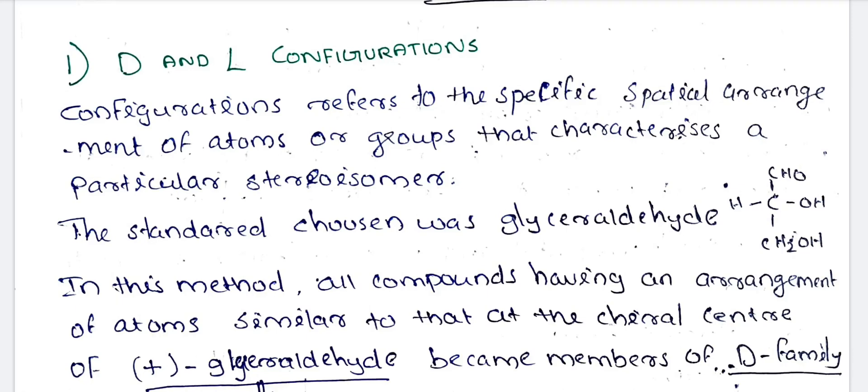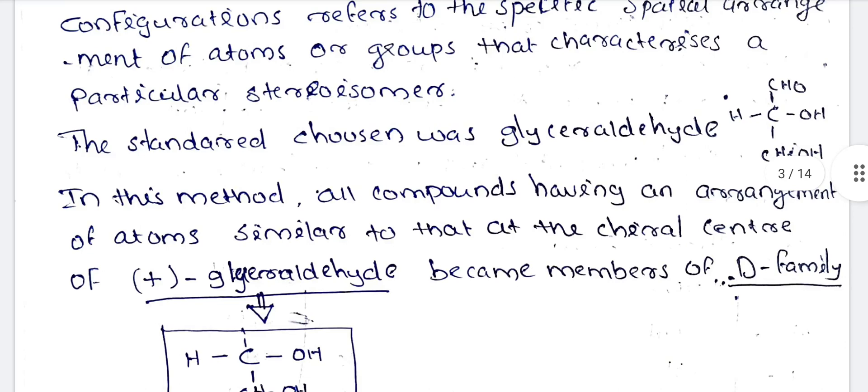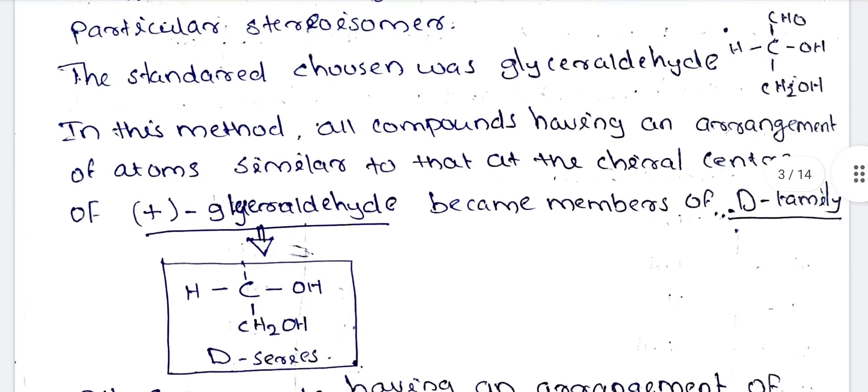We are going to talk about D configuration or L configuration, using glyceraldehyde as the reference compound. All the compounds having an arrangement of atoms similar to that of the chiral center of plus-glyceraldehyde became a member of the D family.